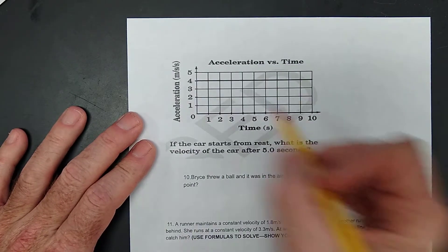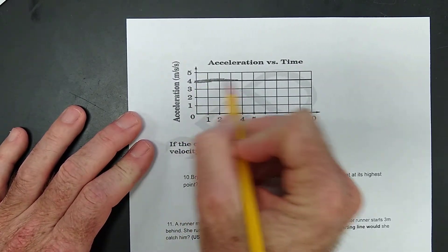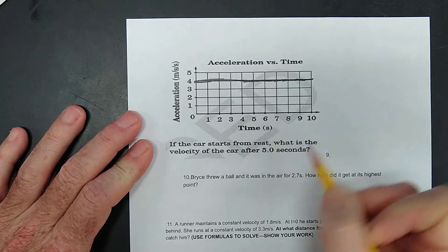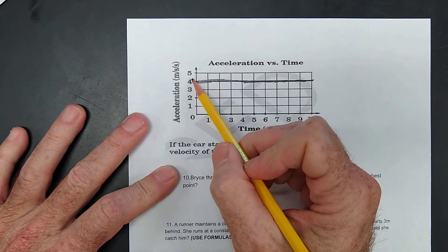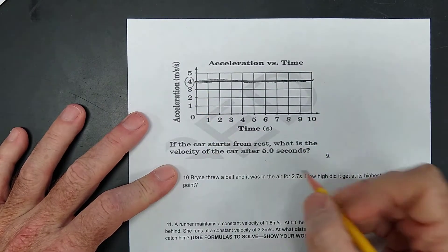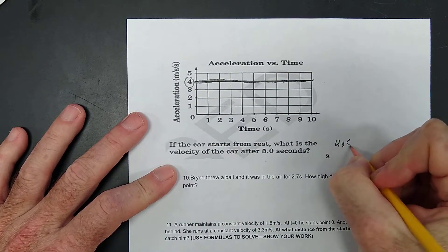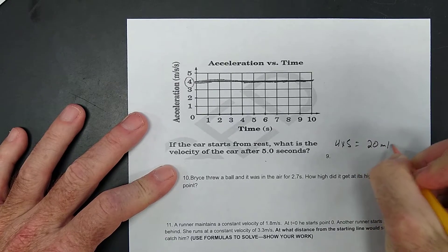If this car starts from a rest, you need to understand that this line is in bold. This car starts from a rest. What is the velocity after 5 seconds? It's acceleration is 4 meters per second. So, 4 times 5, 20 meters per second.